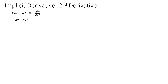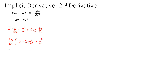Let's look at another example: find the second derivative of 3y equals x times y squared. To get the second derivative, we first need the first derivative. Applying implicit differentiation and the product rule, the derivative of 3y is 3 dy/dx, and the right side gives y squared plus 2xy dy/dx. Rearranging, 3 minus 2xy times dy/dx equals y squared, so the first derivative is y squared over 3 minus 2xy.